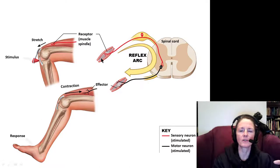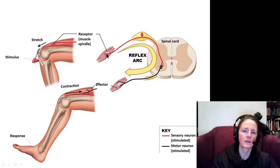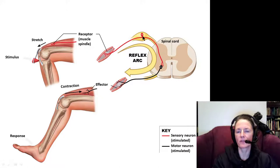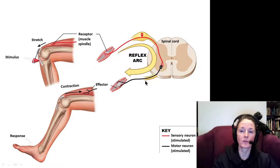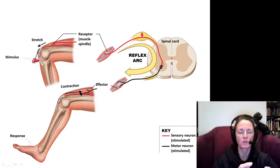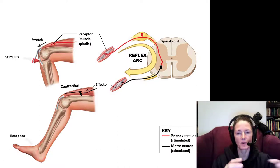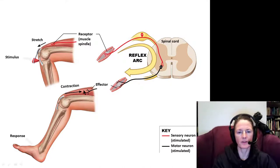When we get a sudden stretch, we pull the tissue in the middle, exciting the dendrites of the receptor. That sends an afferent signal to the spinal cord, where the afferent neuron synapses directly on an alpha motor neuron that controls the extrafusal fibers. This causes them to suddenly shorten, preventing overstretching of the muscle.